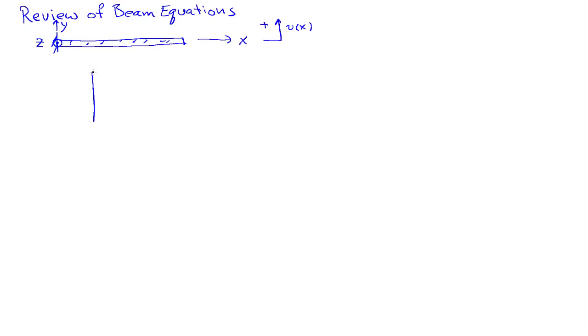The sign convention that we're going to use is one that looks as follows. So if I look at a section of the beam like this, cut it out, then we'll take shear as positive upwards, and moment about the Z axis also as positive.